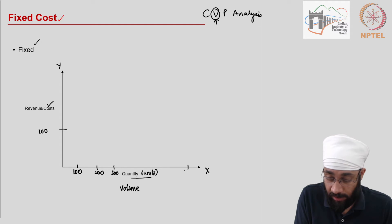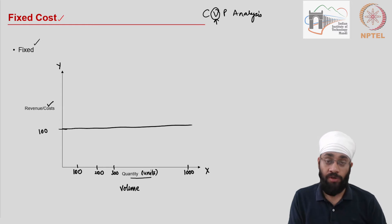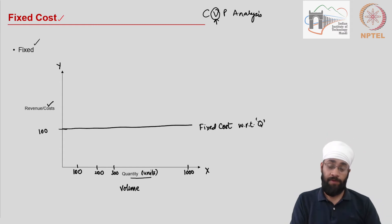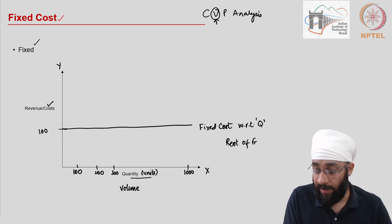And your cost is going to be fixed. Does not matter how many units you produce, your cost remains the same. This is called the fixed cost - fixed cost with respect to the quantity of production. This is the first type of cost. An example of this is rent, rent of factory for example.